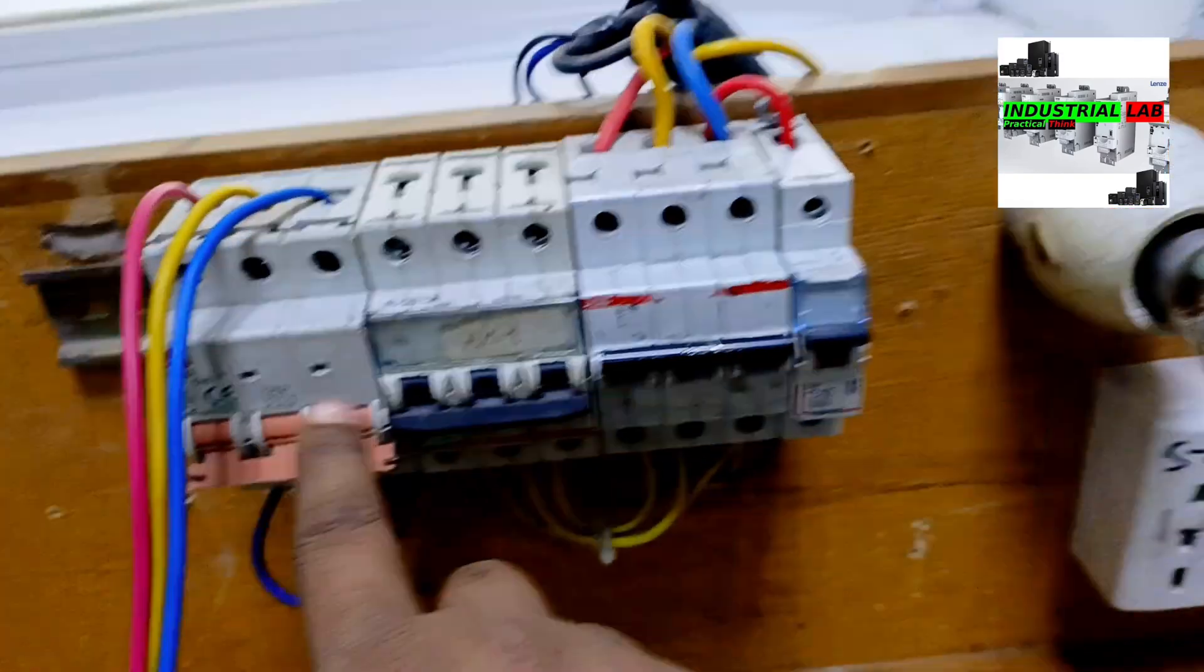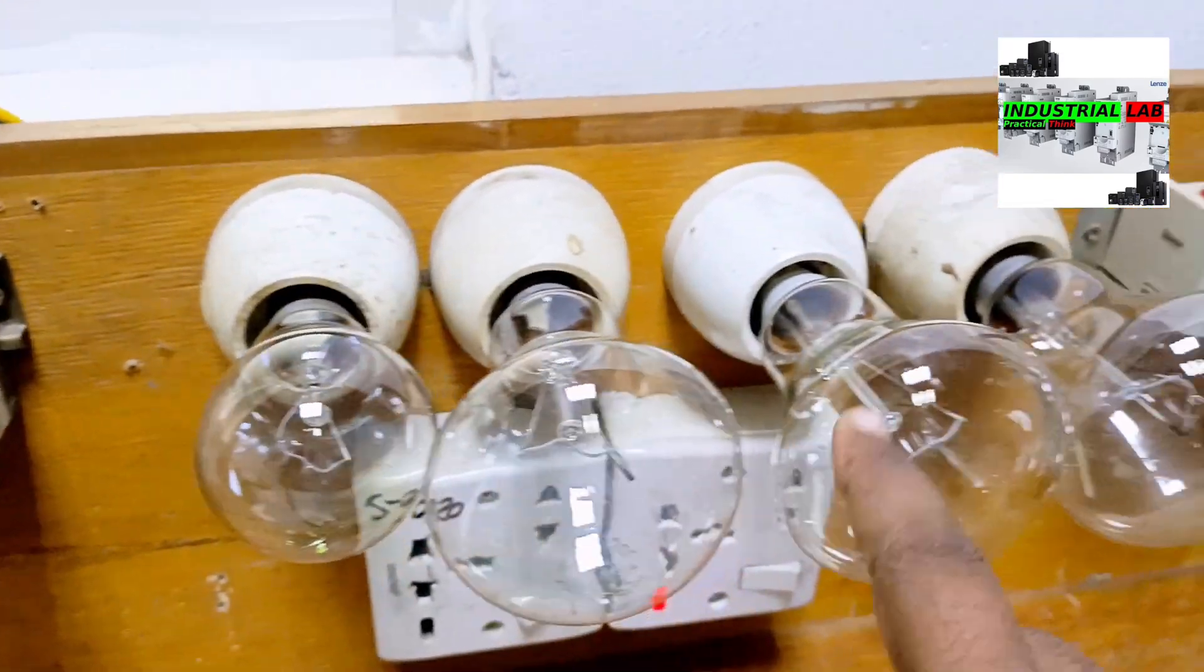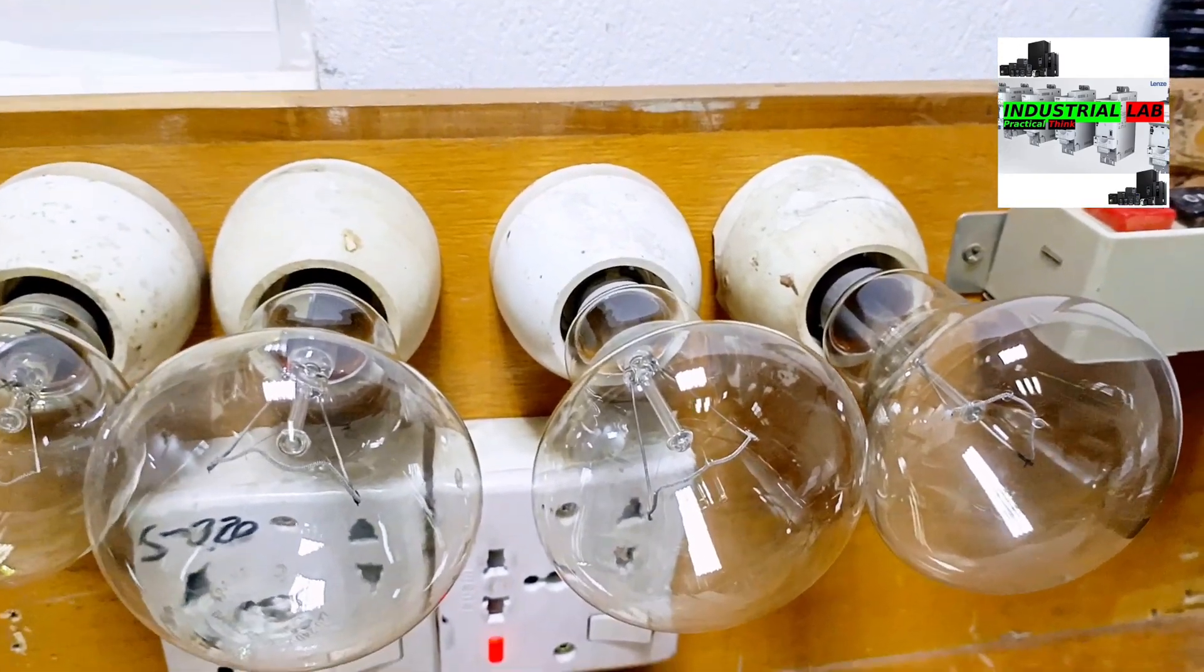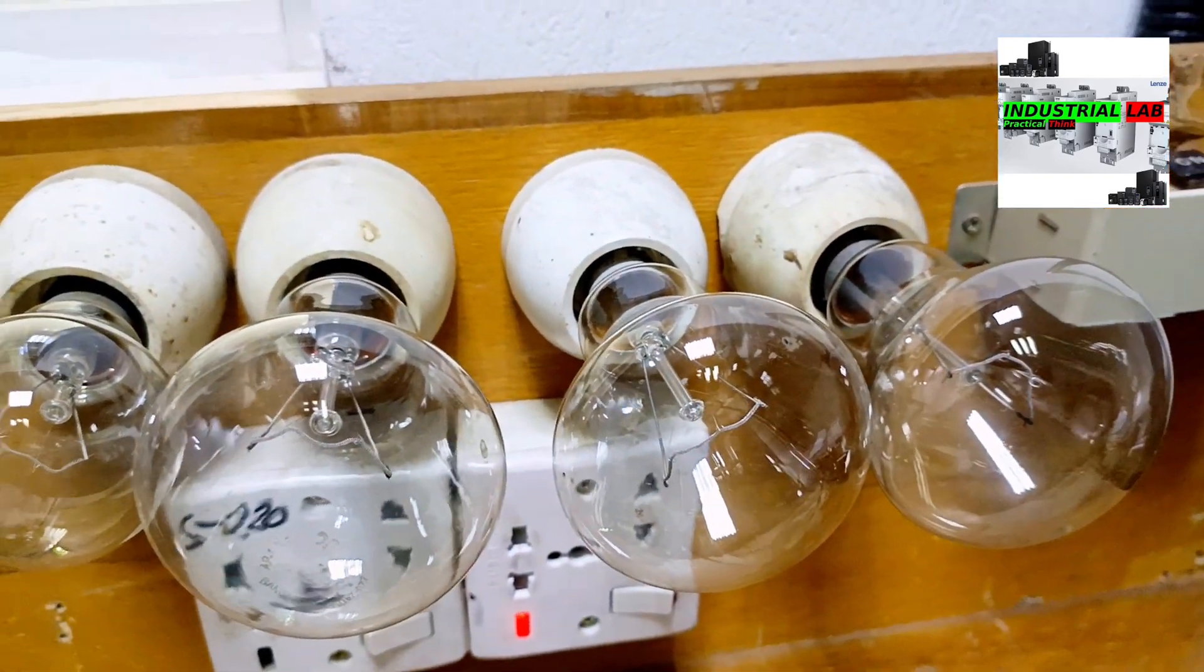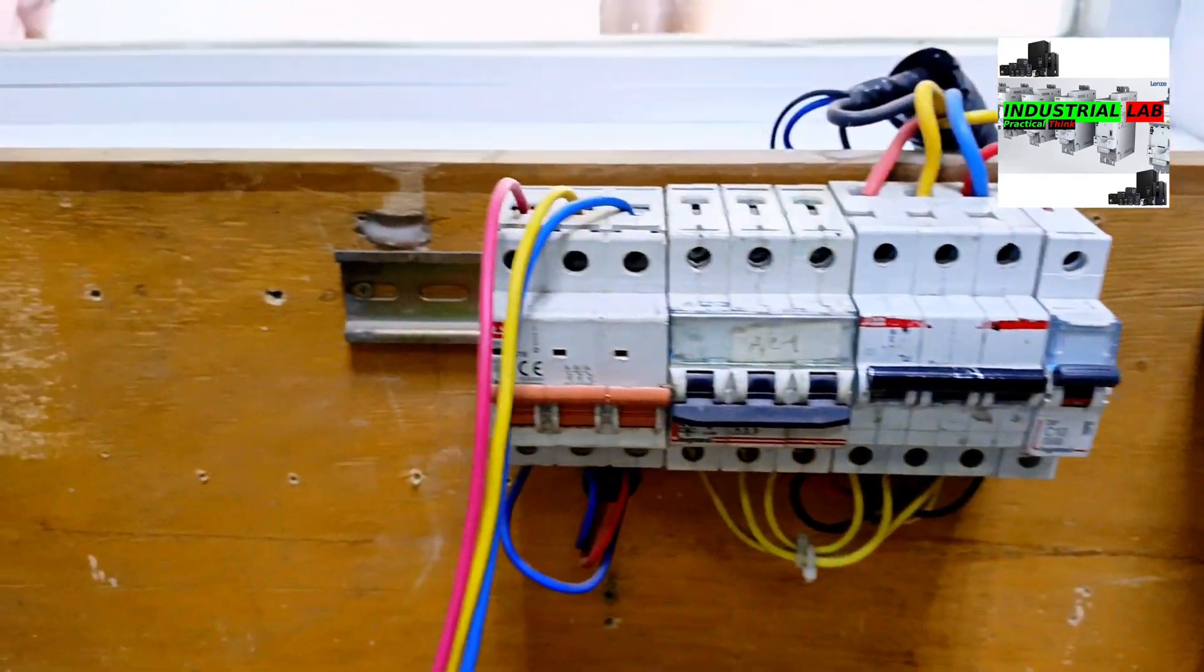When series circuit breaker is on, the series lamp is lighting. You will see. Attention. The series circuit breaker is on. The bulb is lighting also. This is today's video.